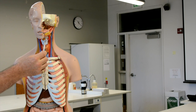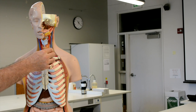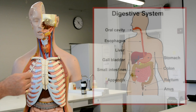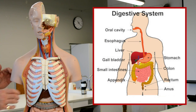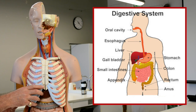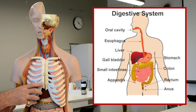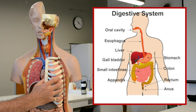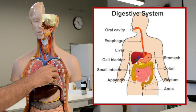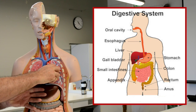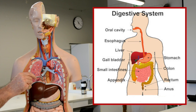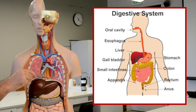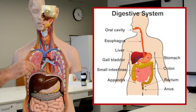From the oral cavity, food travels down through the pharynx and then to the oesophagus. If we remove some of these structures, we'll be able to get a better view of the oesophagus as it passes through the thoracic cavity.